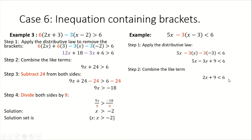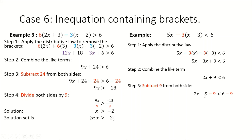Note that we have constant terms on both sides, so we want to group the constant term on one side. We transfer this positive 9 to the right by doing the opposite of adding 9, which is to subtract 9 from both sides. We state that as 2x plus 9 minus 9 less than 6 minus 9. Simplifying: 9 minus 9 is 0, leaving 2x, and 6 minus 9 gives us negative 3.